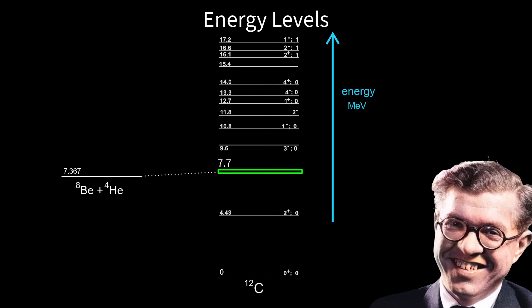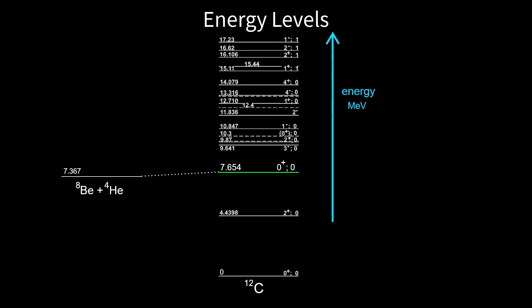Early in 1953, Hoyle asked Willie Fowler and his team of nuclear physicists at Caltech to look for it. This might have appeared crazy, an astronomer telling nuclear physicists that they'd missed one of carbon's energy levels. Nevertheless, Fowler's team looked for the energy level and found it. It's this energy level that allows carbon to exist and you and me with it.